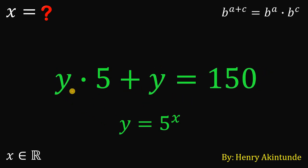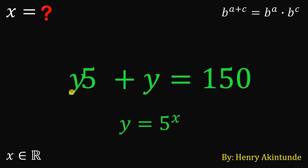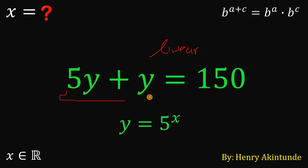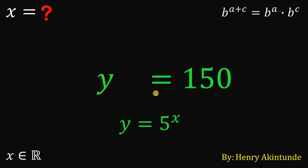Our equation now becomes y times 5 plus y equals 150, or simply 5y plus y equals 150. A while ago we had an exponential equation, but now we have a linear equation, which is very easy to solve. Simplifying, 5y plus y gives us 6y.